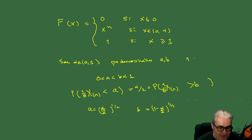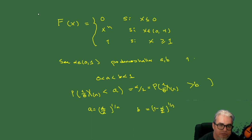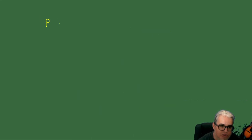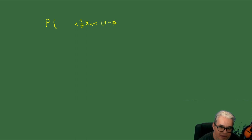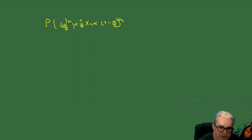El intervalo [A, B] no necesariamente tiene longitud mínima. Pero si calculamos la probabilidad de que (1/θ)·X_(n) esté en ese intervalo, obtenemos que la probabilidad es 1 − α. Ahora queremos usar esta desigualdad no para un intervalo de esta variable, sino para un intervalo para θ.